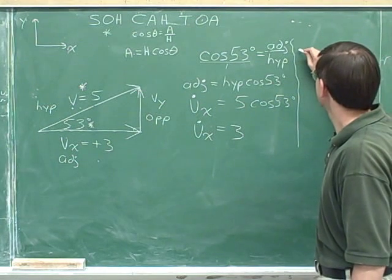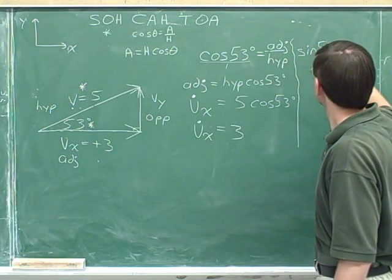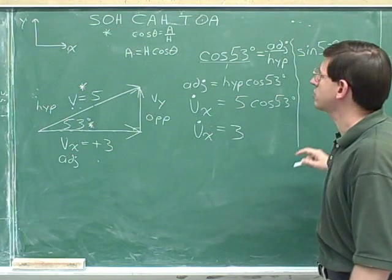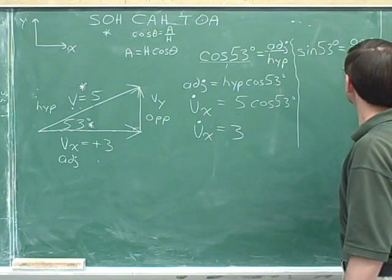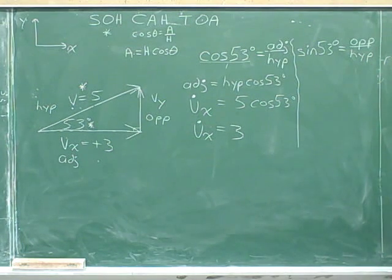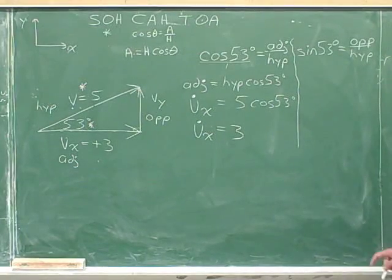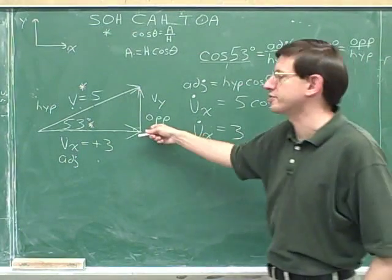Sine of 53 equals opposite side over hypotenuse. I'm not going to plug in yet. I'm just going to try to solve this equation for the opposite side, because that's what we're trying to figure out.